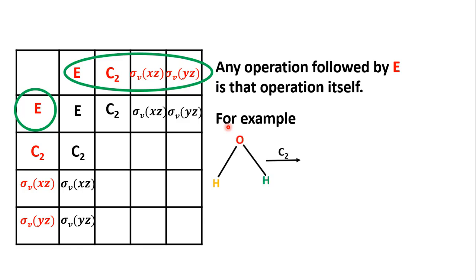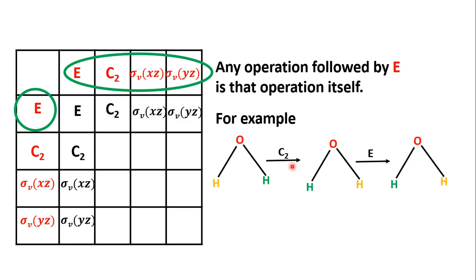Consider the water molecule shown on the screen. The two hydrogen atoms are distinguished with different colors for convenience — one is yellow and the other is green. When the C2 operation is done, the two hydrogen atoms are shifted: yellow goes to the other side and the green hydrogen atom comes to the left. Followed by E, which does nothing, so the net result of these two operations is C2.